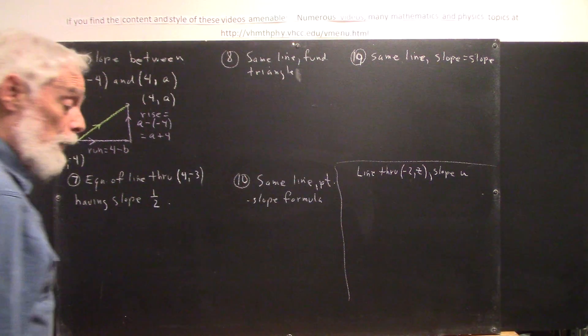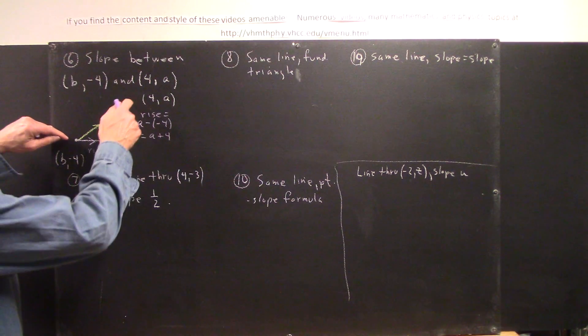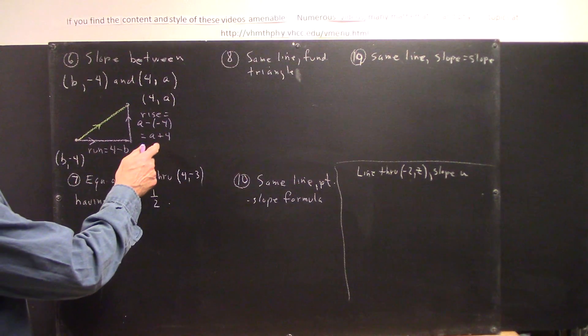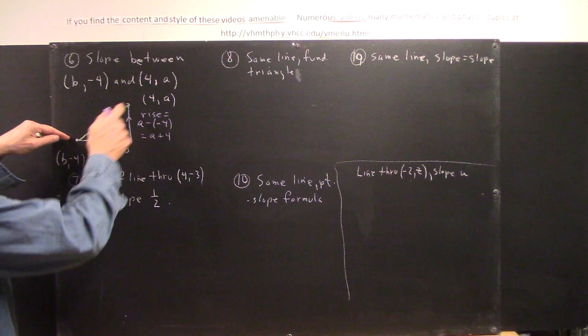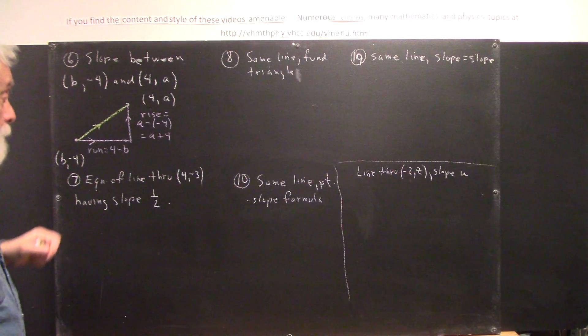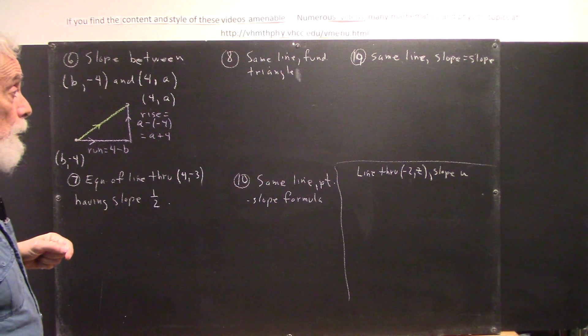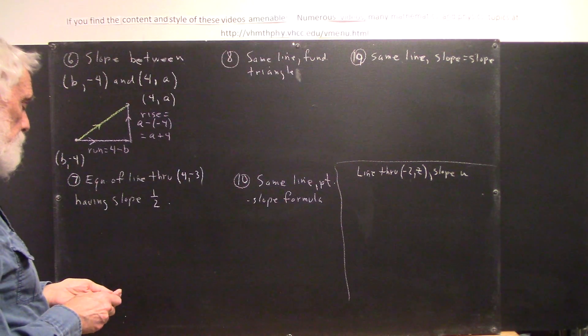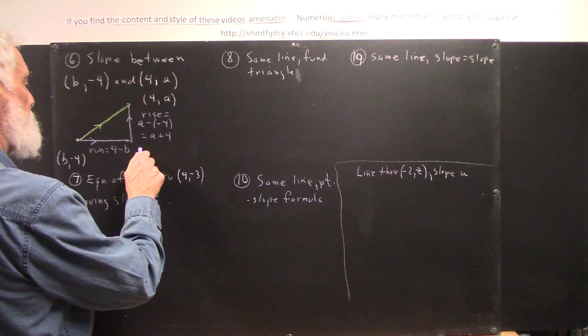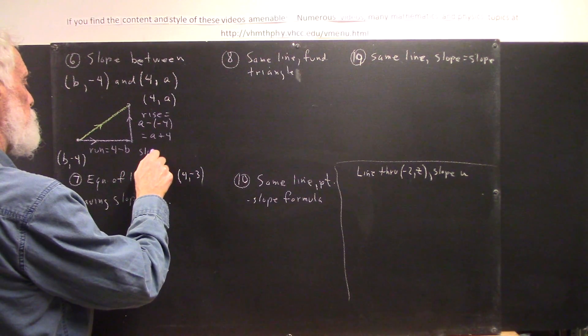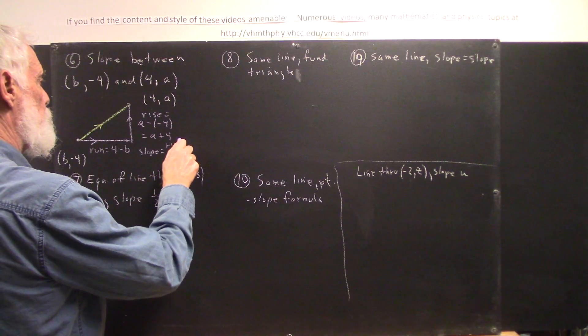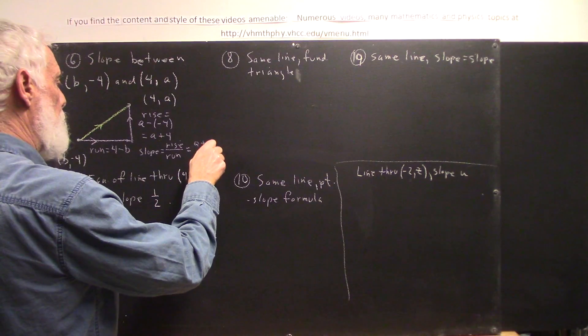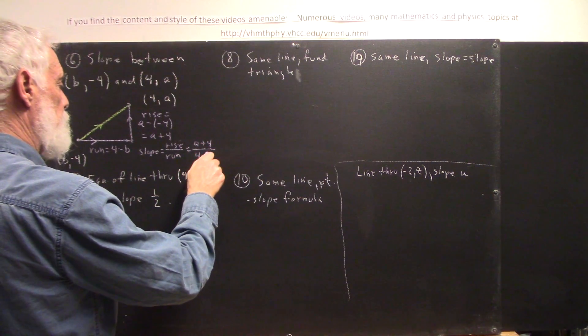And now we're in marvelous shape if we want to find the distance between these points. We would use the Pythagorean Theorem. We'd add the square of this to the square of this and take the square root. That's how the Pythagorean Theorem works. That's not what we're asked here. We're asked to find the slope. Well, the slope is rise over run. So we easily write down our expression for slope. Slope equals rise over run. In this case, that's A plus 4 over 4 minus b.